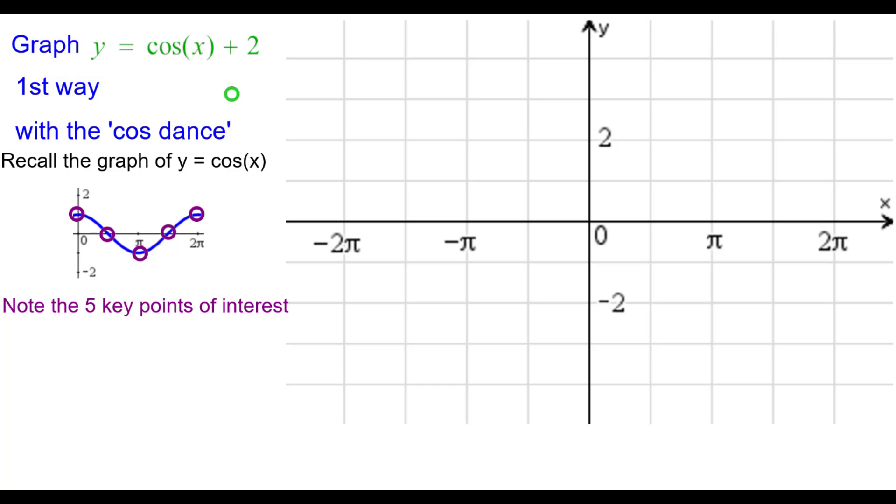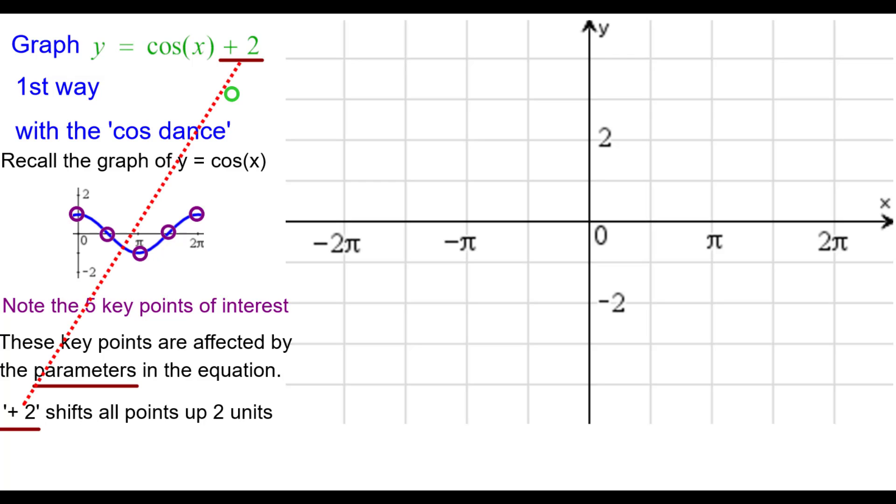I just circled them there. These key points are affected by the parameters in the equation as all points are. And the key parameter here, the only one, is adding two outside the function.